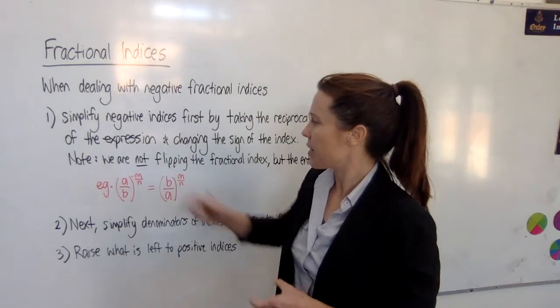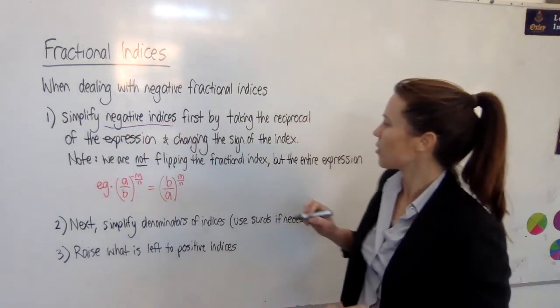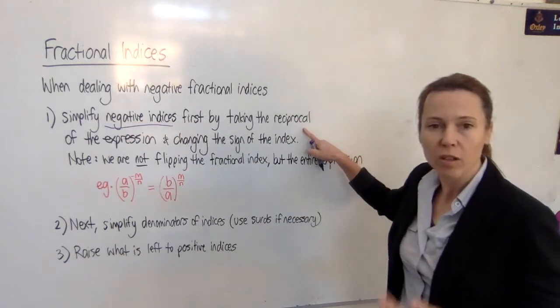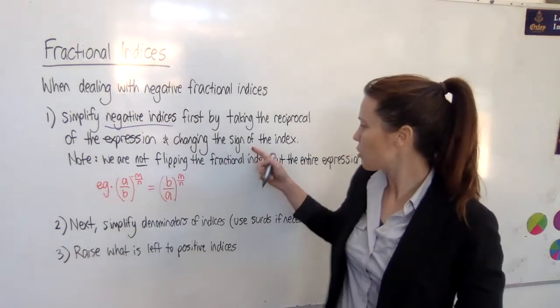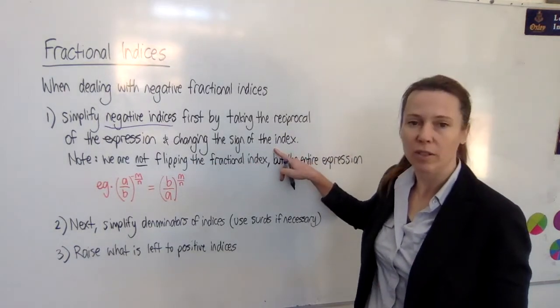First, start by simplifying the negative indices. Now you can do that by taking the reciprocal of the whole expression and you change the sign of the index when you do that.